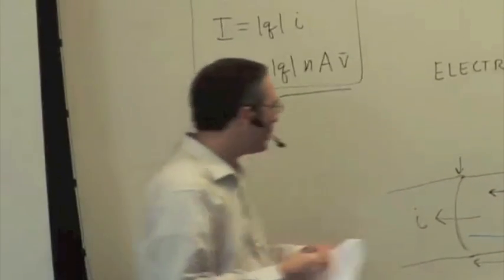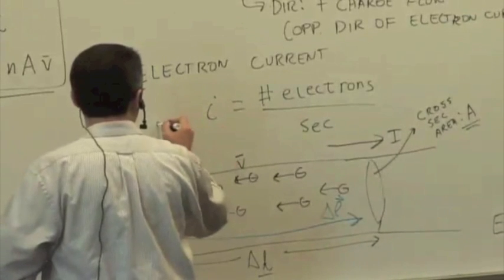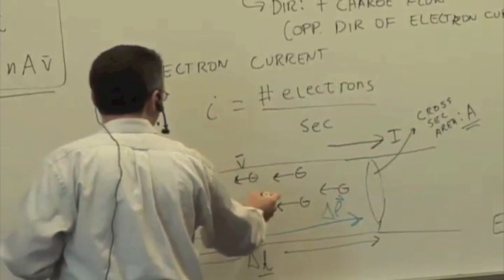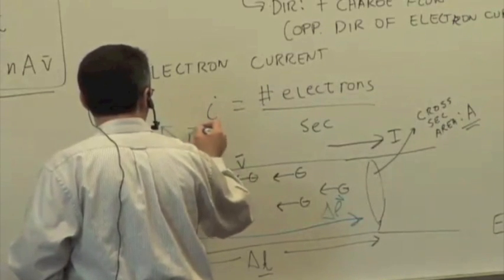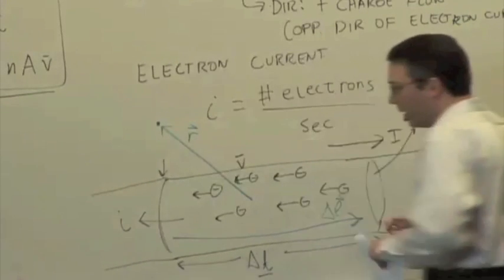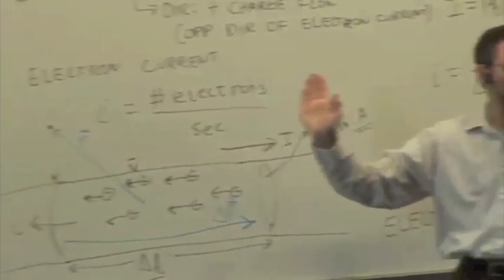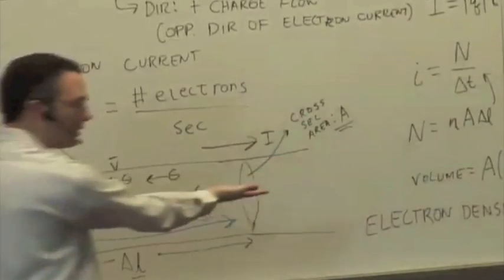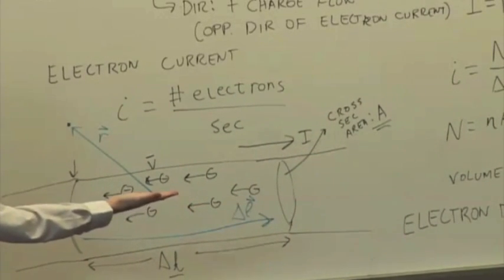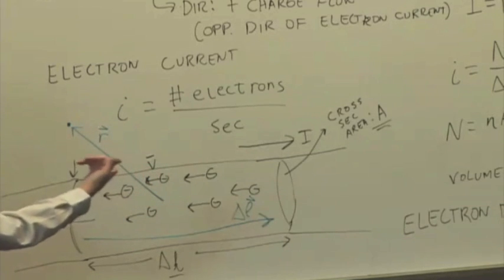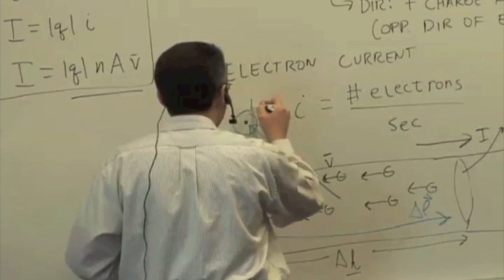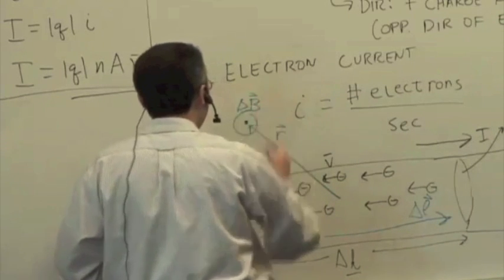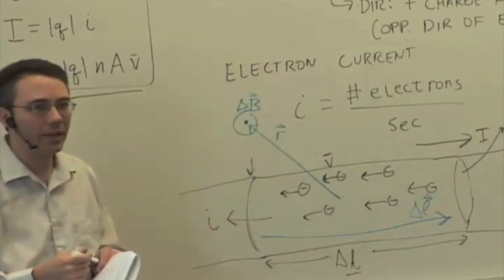Once you know the direction of delta L and you have an observation location, you draw R from the source to the observation location, then apply the right-hand rule: point fingers in the direction of delta L, curl them toward R, and the thumb points in the direction of delta B at that location.